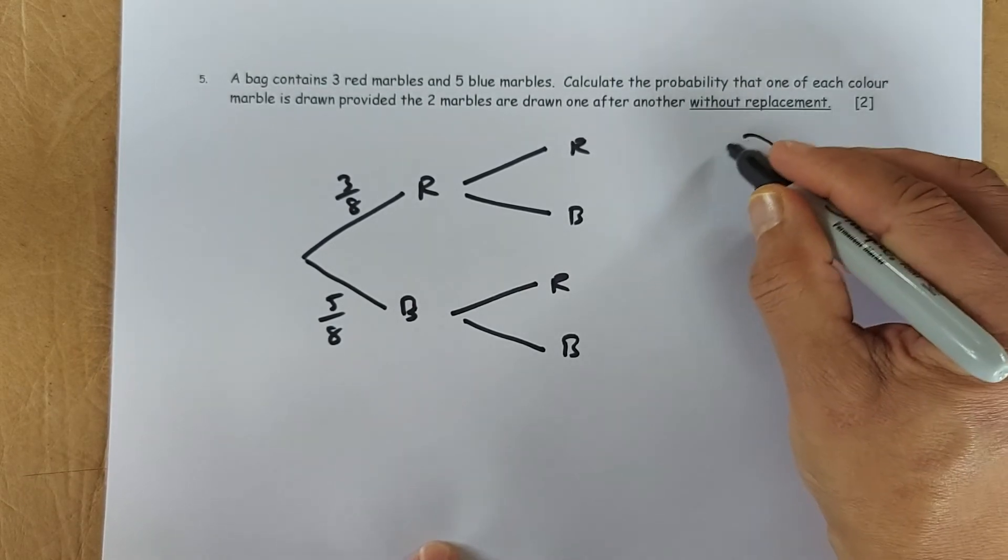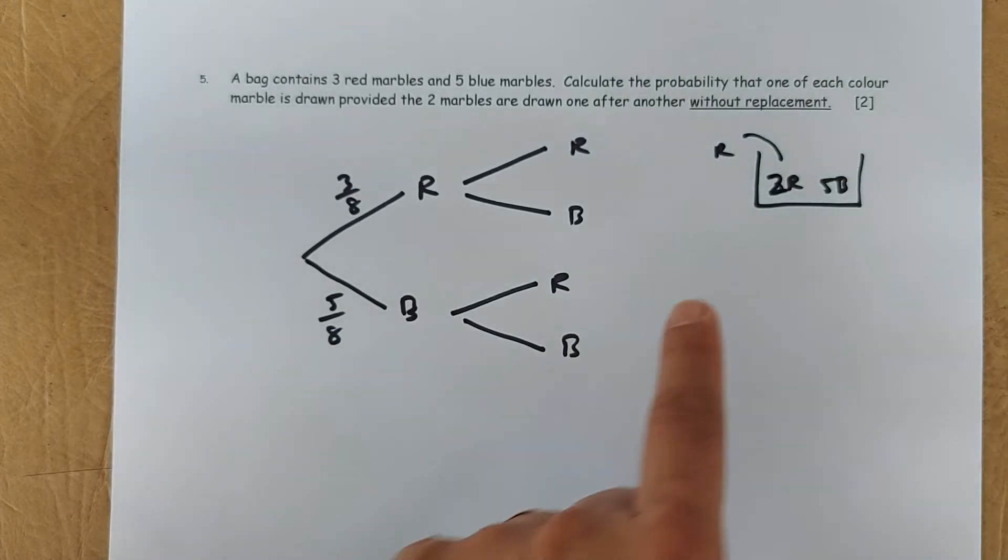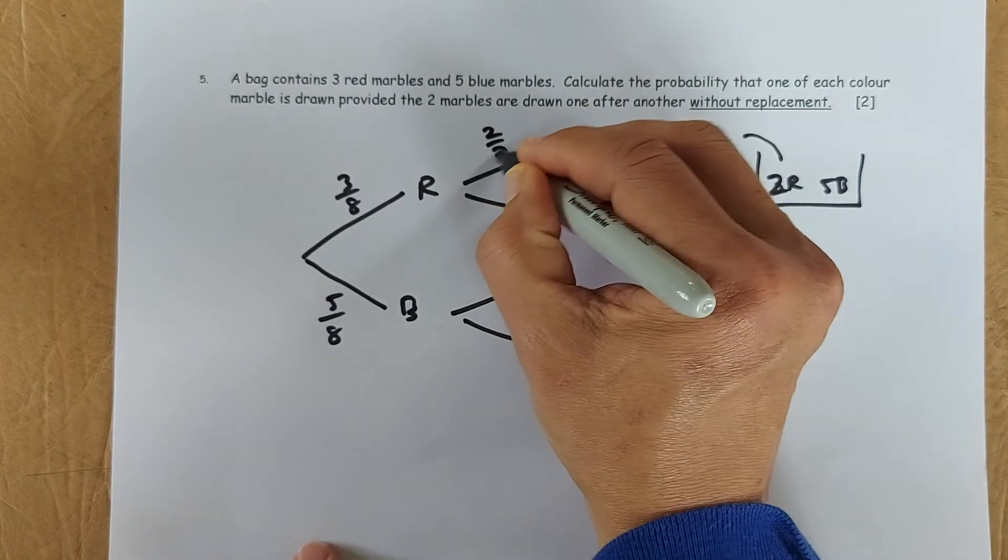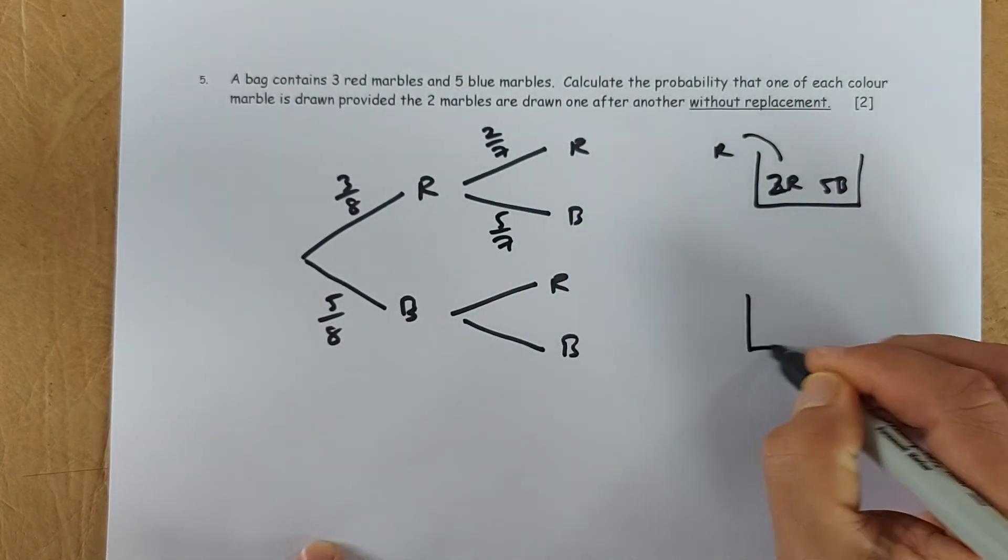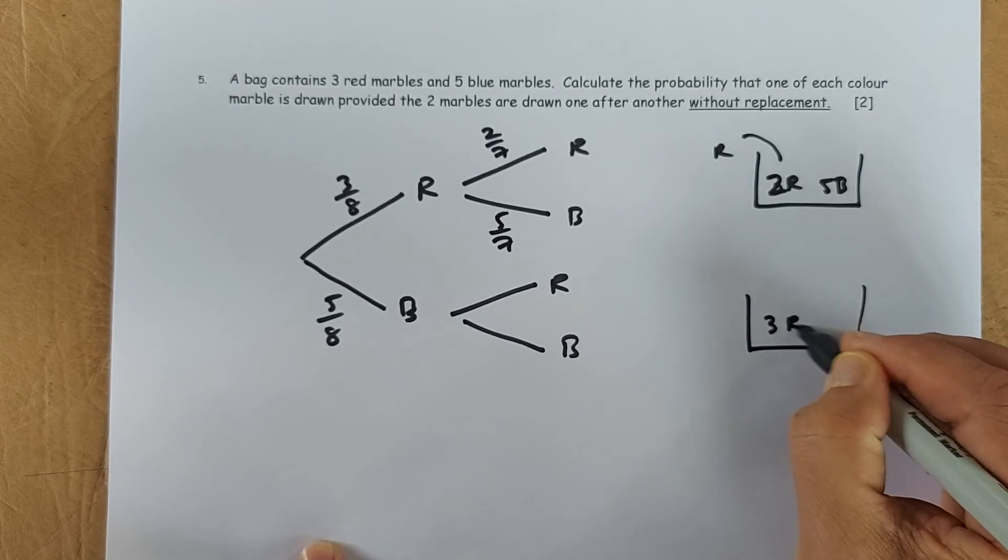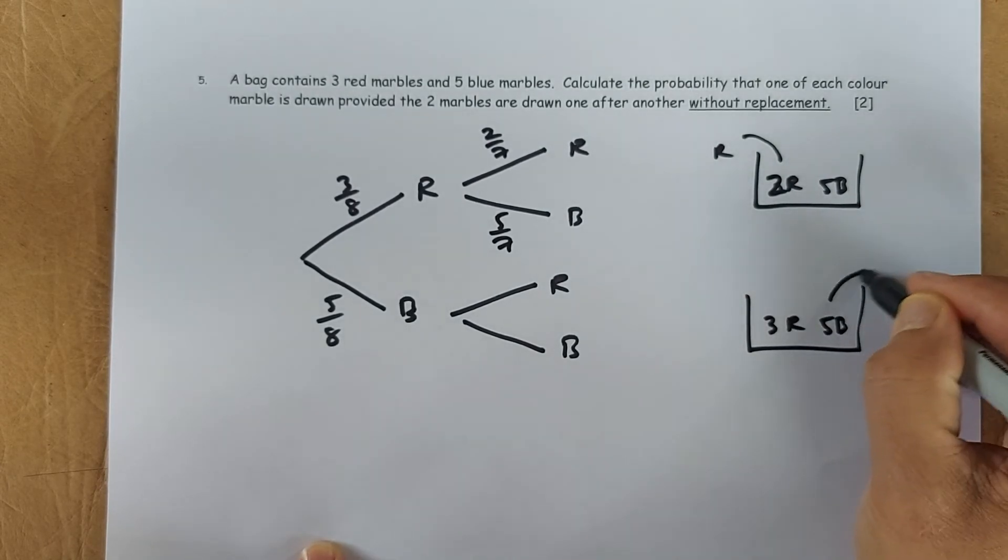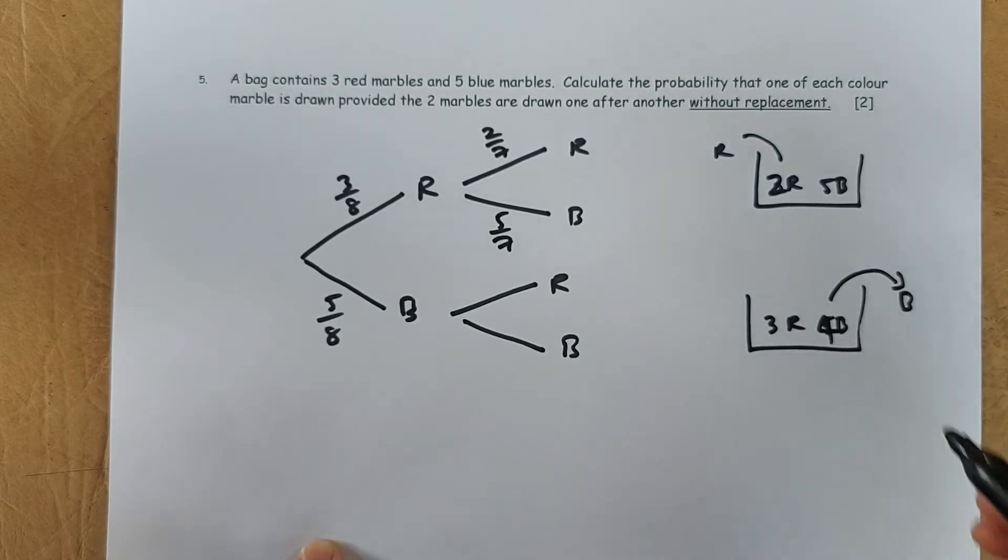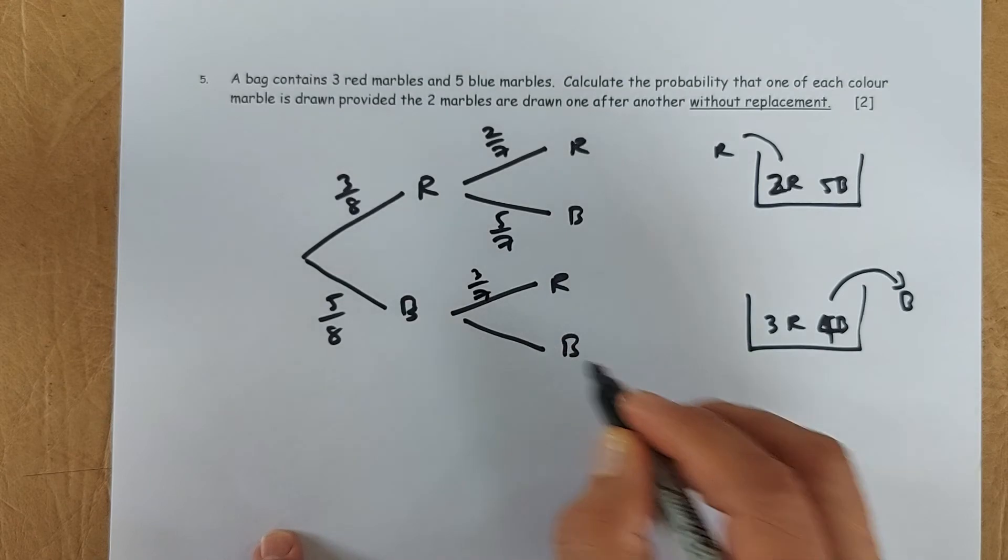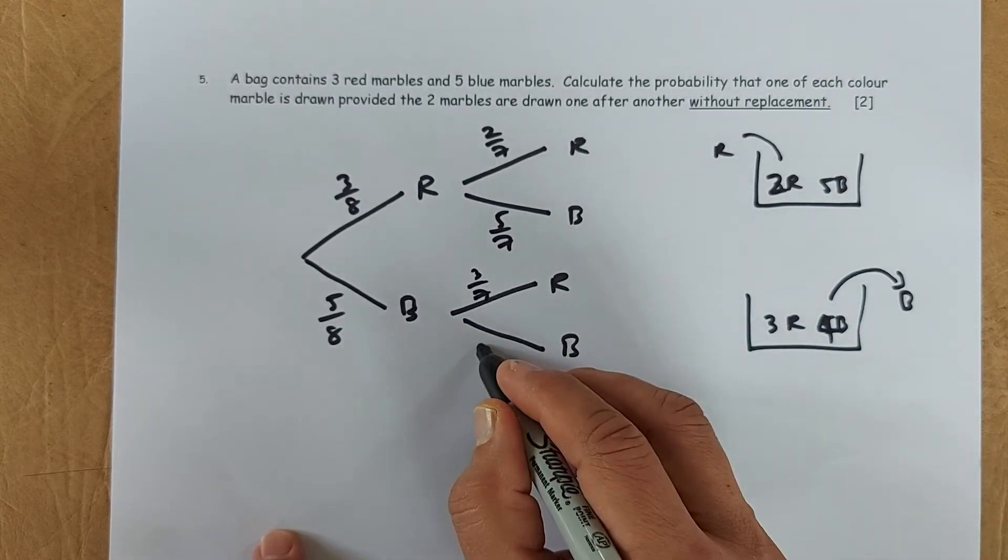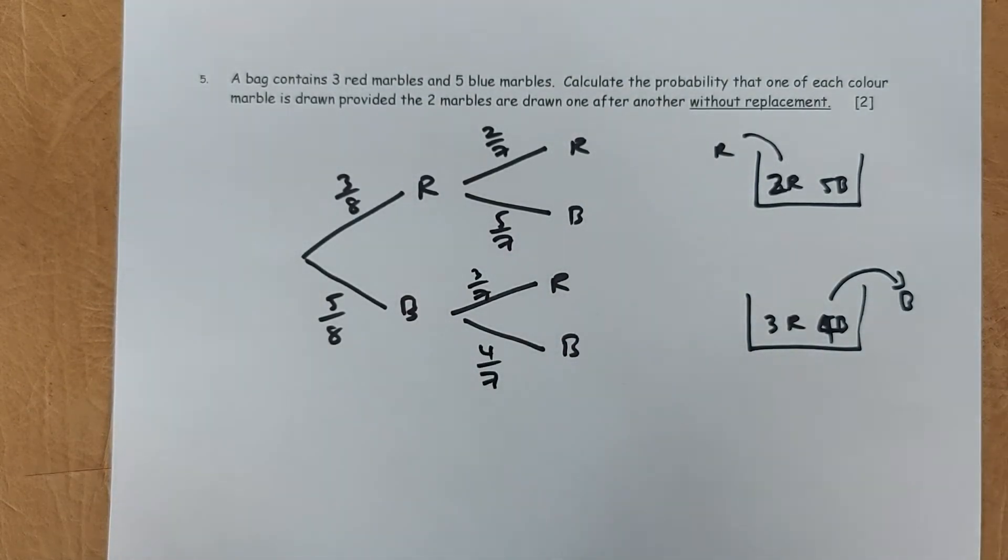If the first ball is a red, this becomes a 2. So now to get the next red, it's going to be 2 over 7, and to get the next blue is 5 over 7. Similarly, if the first red is 3 red and 5 blue, if the first ball drawn is a blue, it becomes 4. So now the chances of a red is 3 over 7, and the blue is 4 over 7.